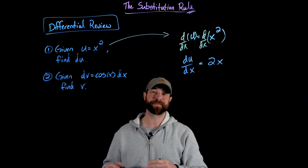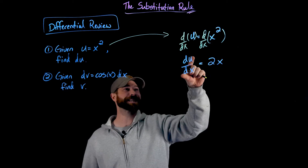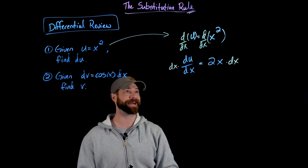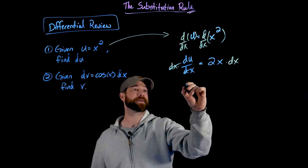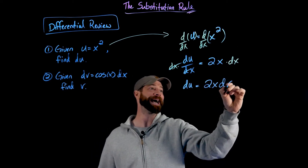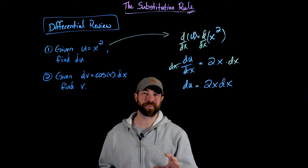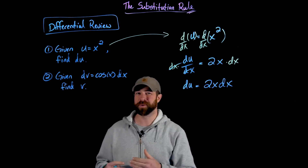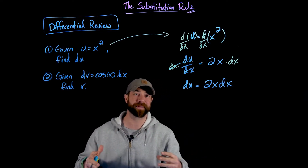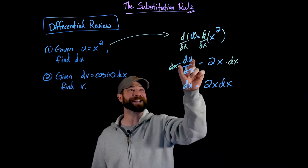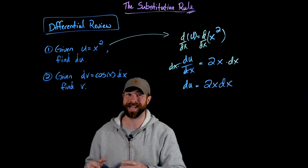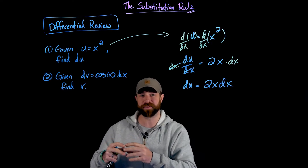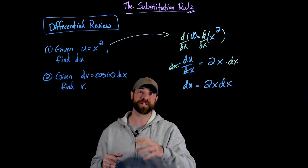I'm trying to find du, so I'm going to multiply both sides of this expression by dx. The dx's cancel, and what I end up with is du equals 2x dx. When you see du/dx notation, it's a really powerful notation — these are actually infinitesimal values that you can multiply or divide. We've been using them in our integration with that little dx that represents a small change in the interval.